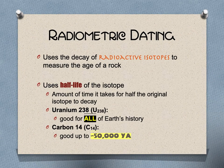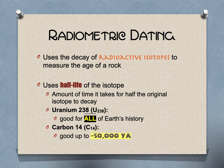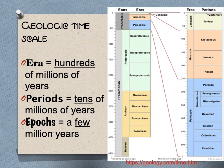Another piece of evidence is radiometric dating. You have two options: uranium-238 (U-238) or carbon-14. U-238 is good for all of Earth's history, while carbon-14 goes back only about 50,000 years, after which it's no longer useful.